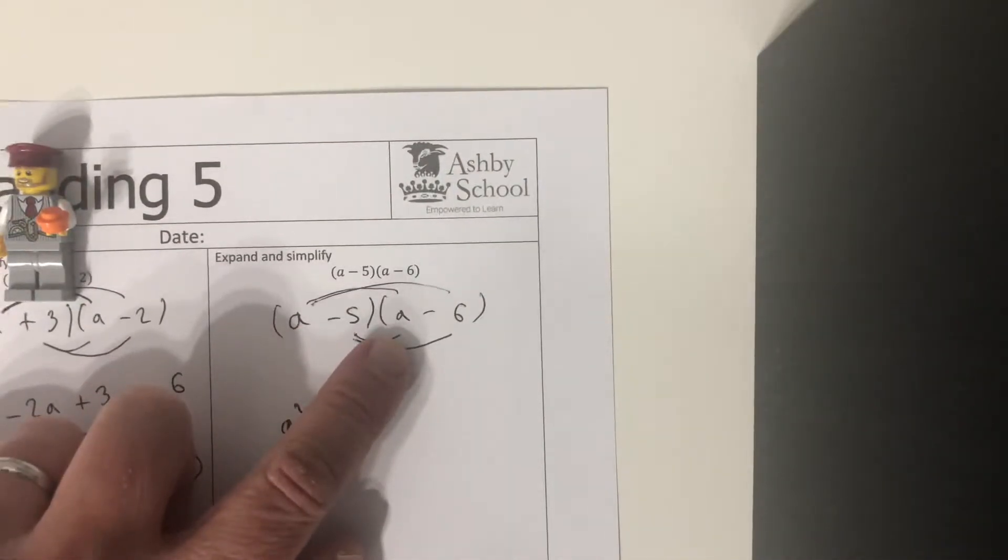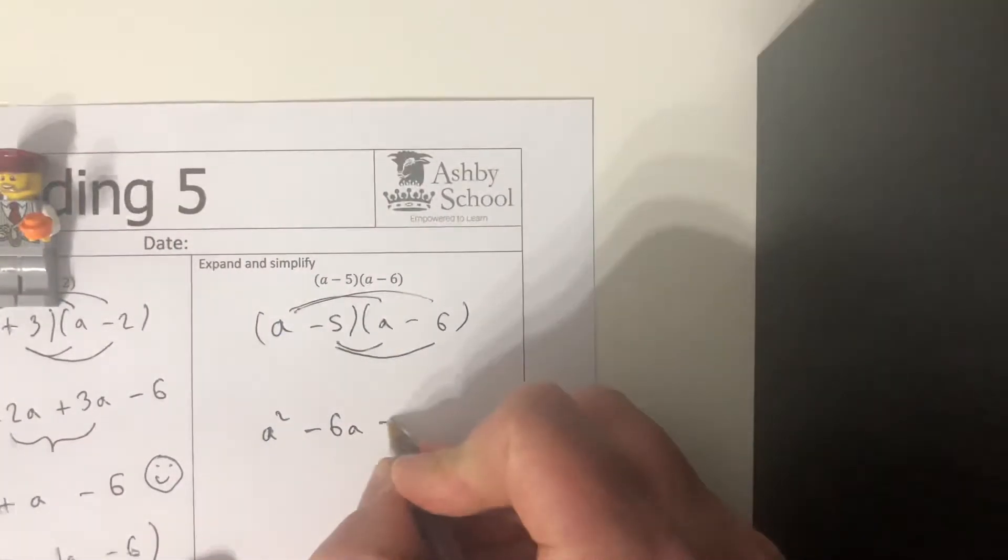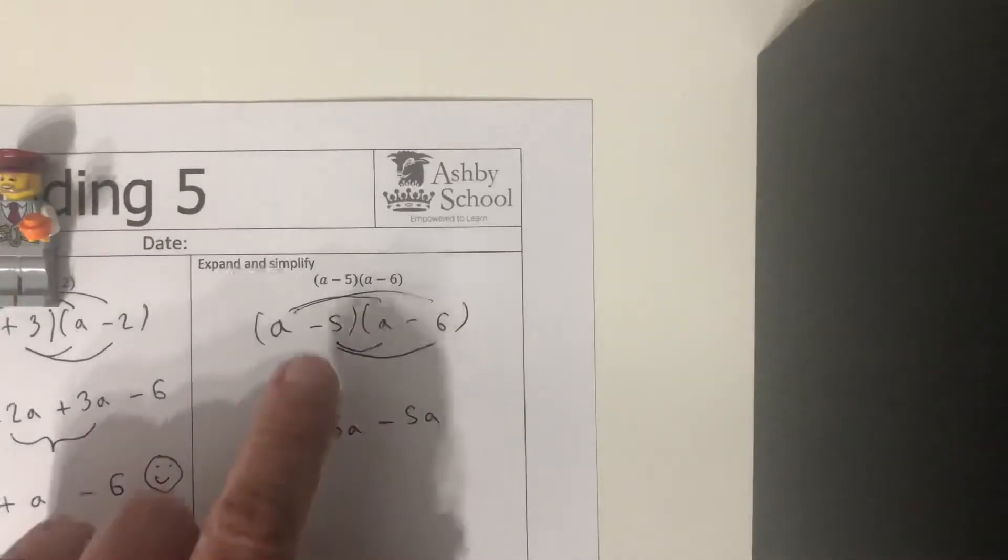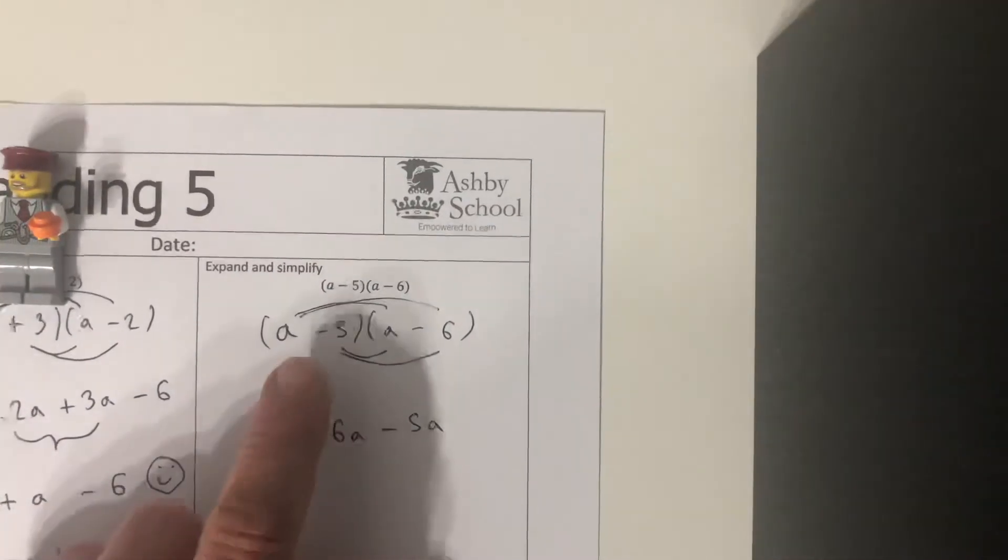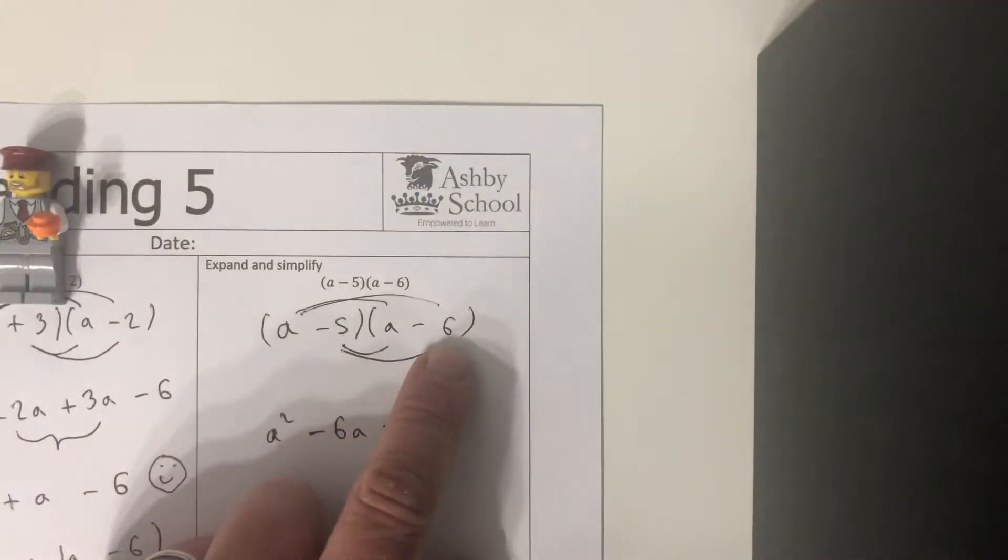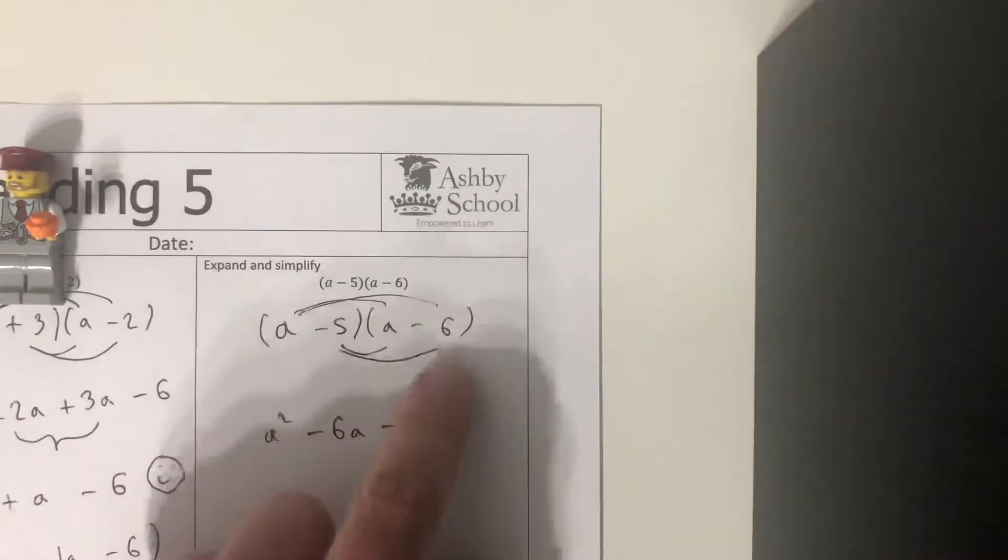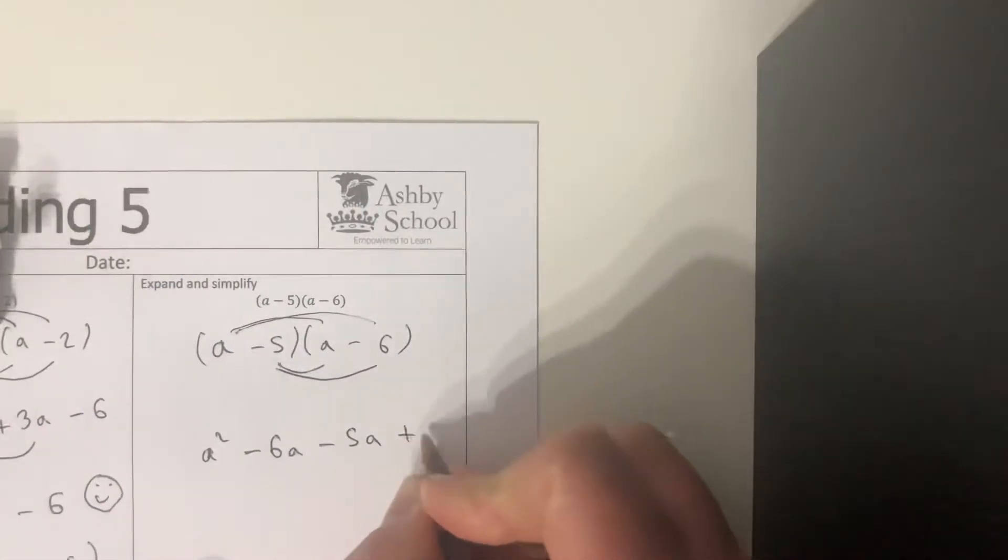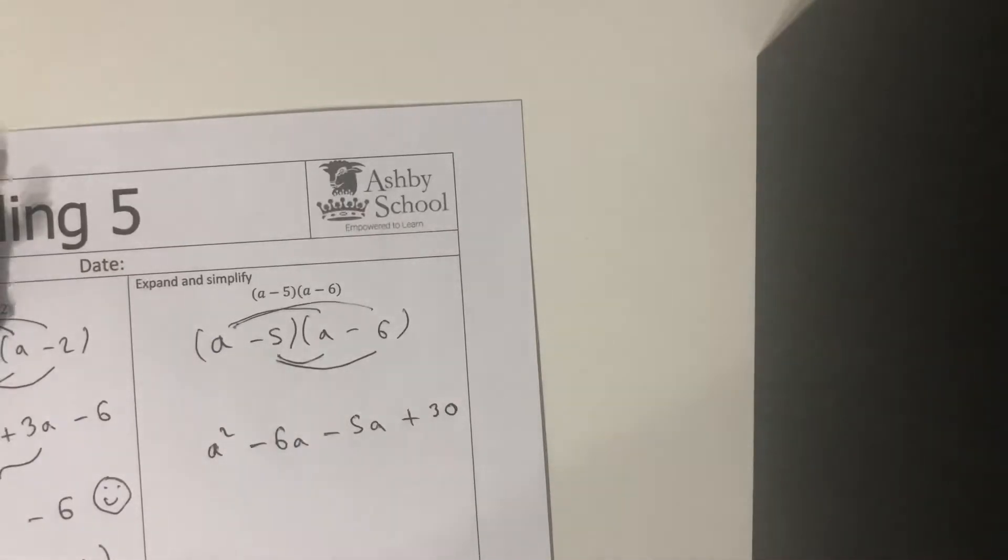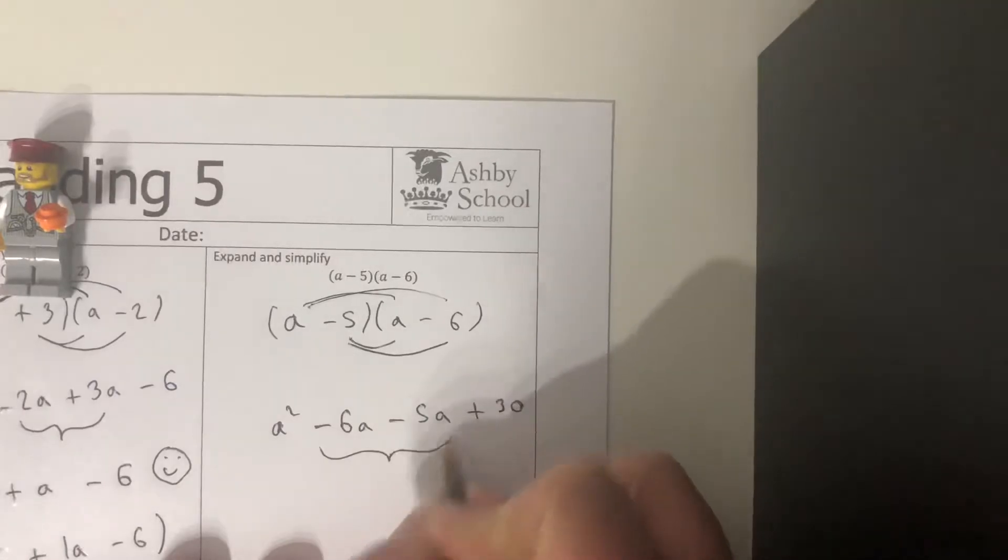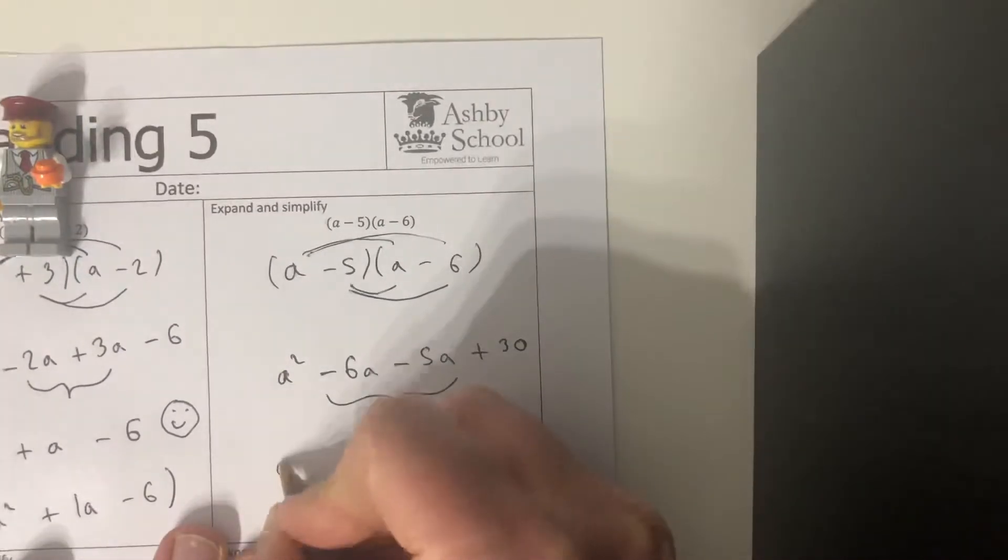Minus five times a, okay, well it's negative times the a this time, but all right, minus five a, no great shakes there. And then of course you've got to be really careful. This is why we do all that work with negative numbers. Minus five times minus six, well minus times a minus is a plus, and so minus five times minus six is plus 30. You have not many people write minus 30 there, it's wrong, it's plus 30.